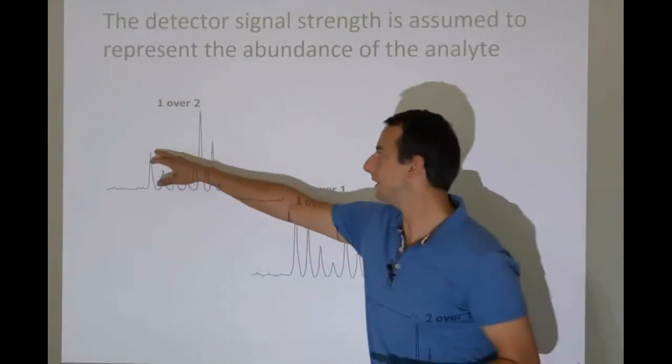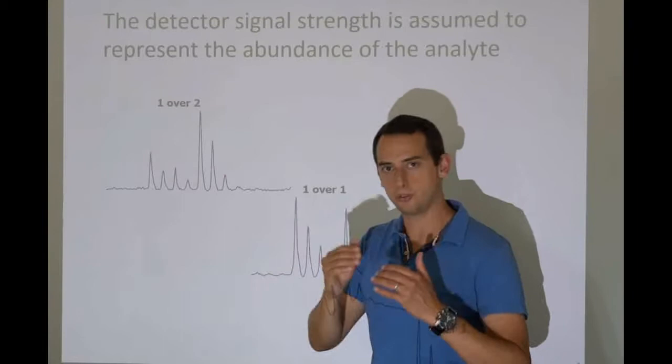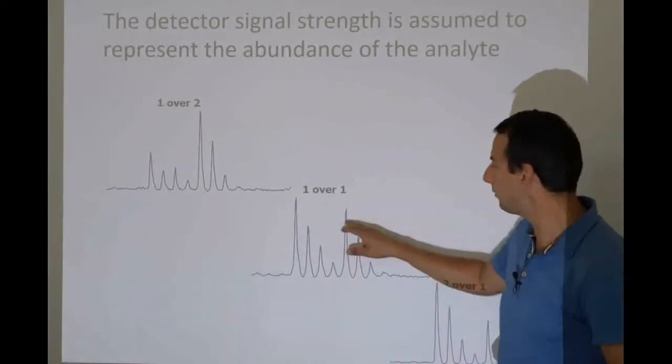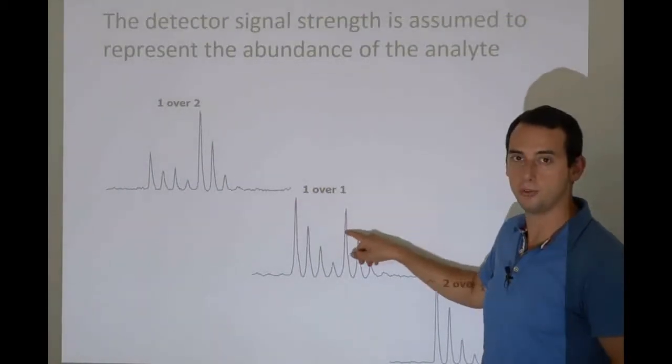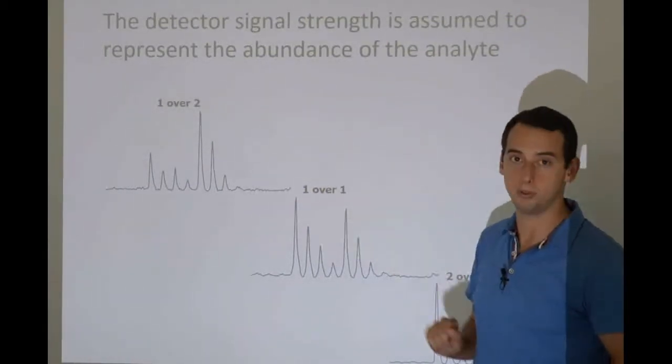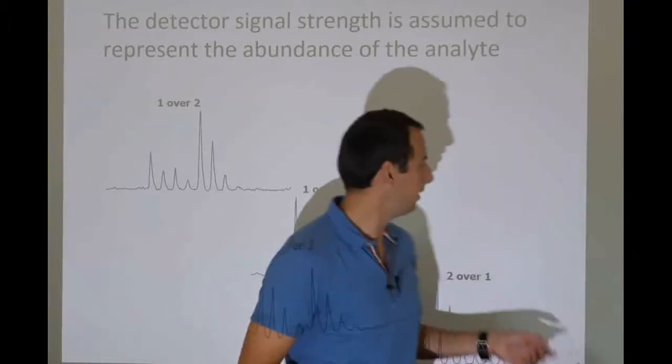And so this is probably as good as it gets to equal. Just like this isn't exactly half either, right? There's always this measurement error. These are roughly equal. So we could say this is present at the same concentration as this. And since we know this at 10 nanograms per ml, this will also be 10 nanograms per ml.